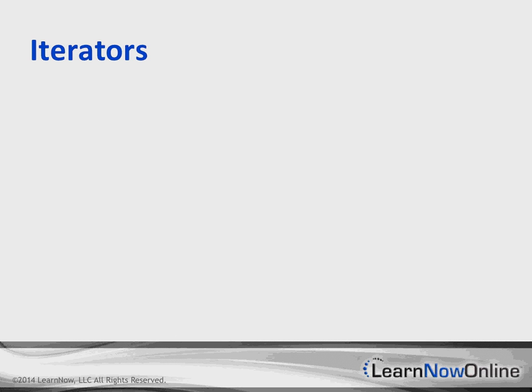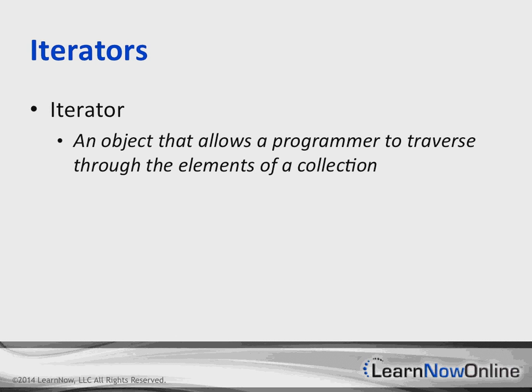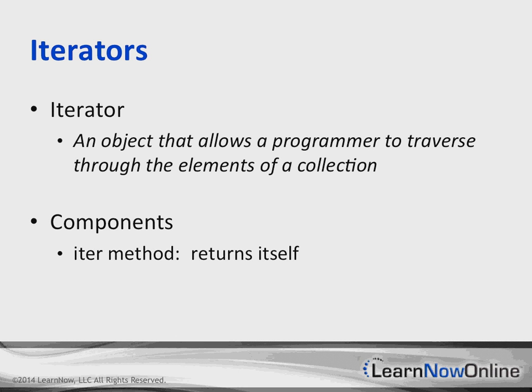Iterators are a very elegant way of traversing data, whether it's an array or a dictionary. Python lends itself to having a really nice clean way of going through it and giving yourself a lot of control. If you want a definition: an iterator is an object that allows a developer to traverse through the elements of a collection, and as I'll show you, it'll work with multiple collection types.